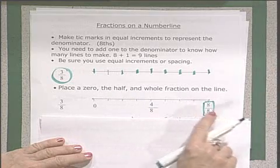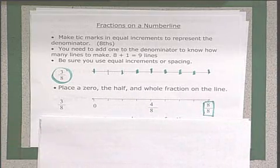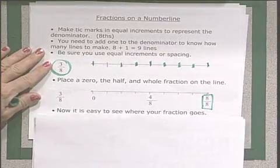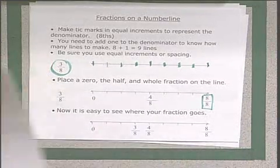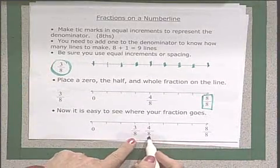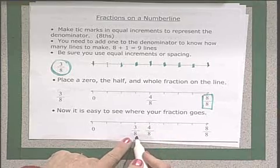So once you have those three numbers placed on a number line, which you can do for any fraction, then it's easy to see where your fraction goes. Four eighths is in the middle, we know three eighths go right before it.